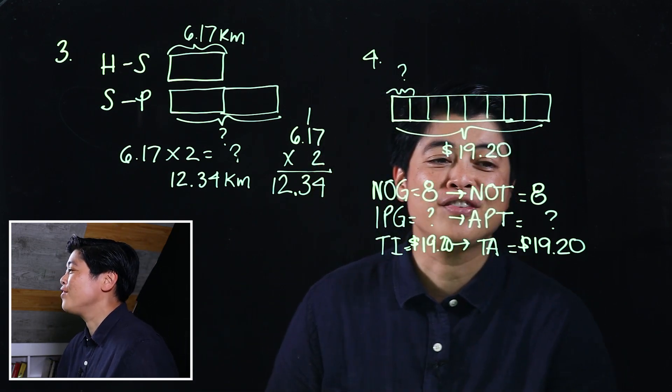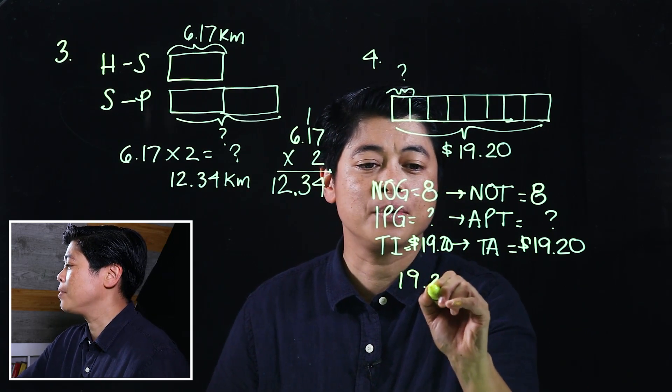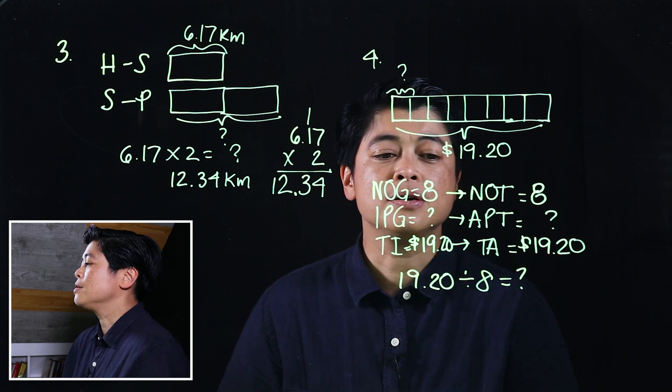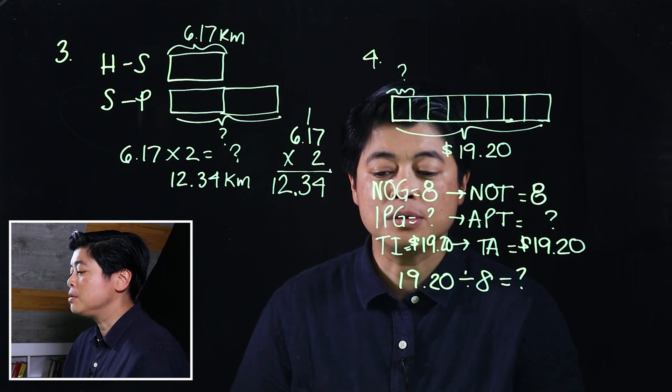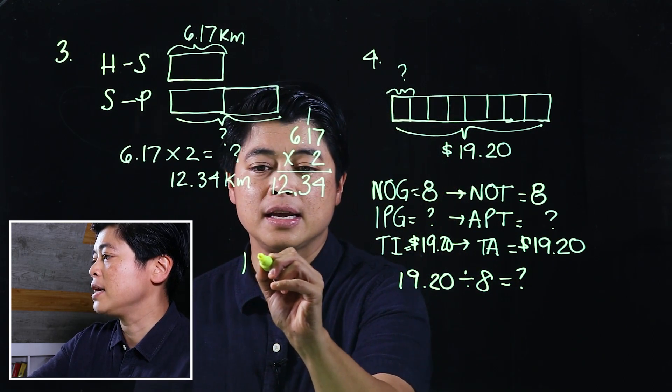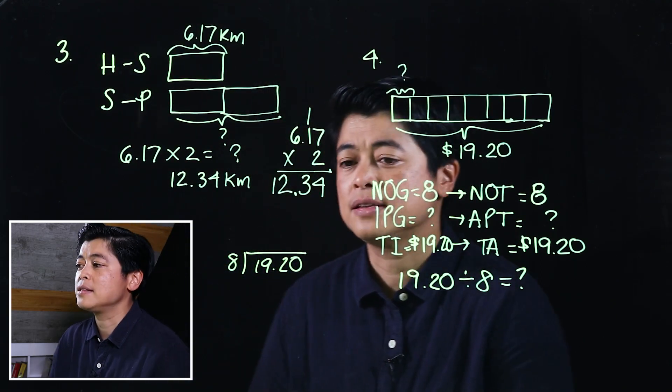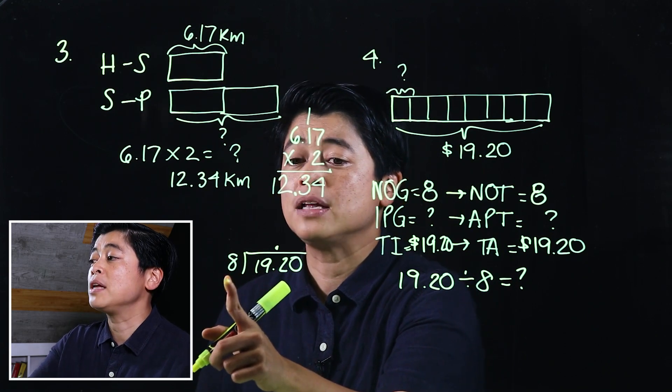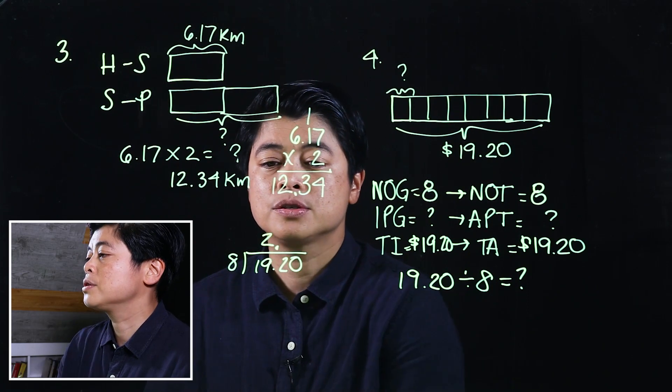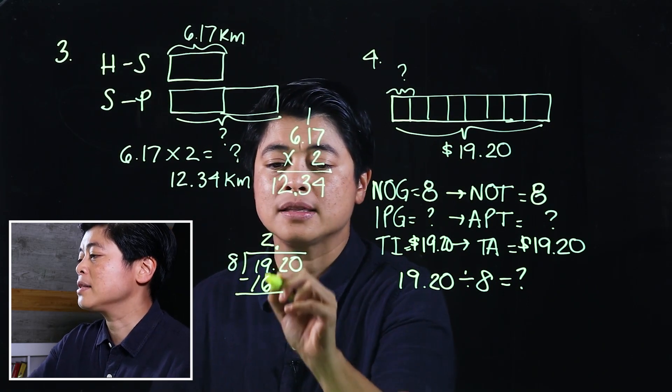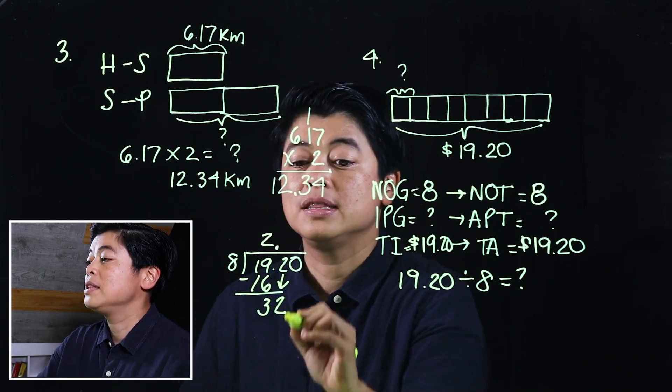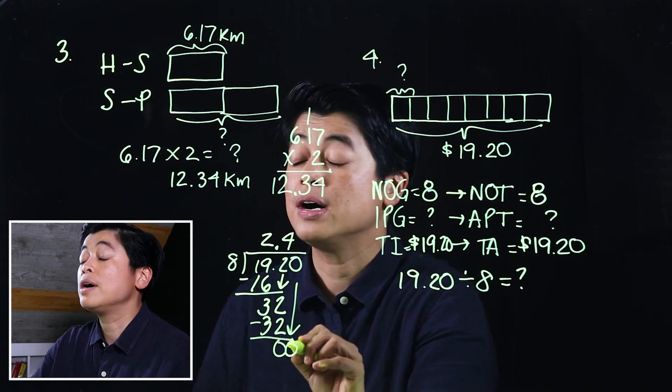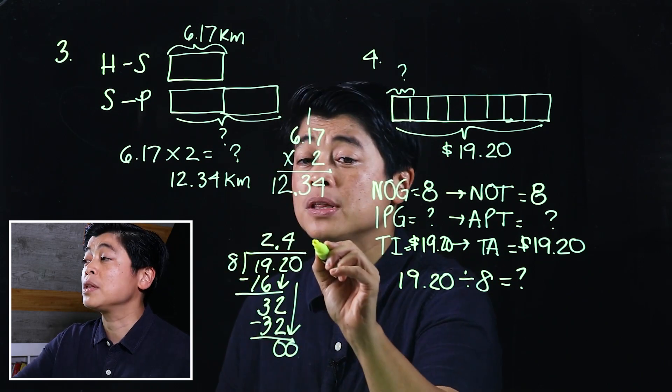If we look at this, the equation will be 19.20 divided by 8, because what's missing is the 'each.' If we can't do it mentally, we will do it computationally. I will write it here: 19.20 divided by 8. I can put the decimal at the start or at the end, doesn't matter. 19 divided by 8 is 2, so that will be 16. Subtract, that will make it 3. Bring down 2. Divide, that will make it 4. Multiply, that will make it 32. Subtract, bring down.